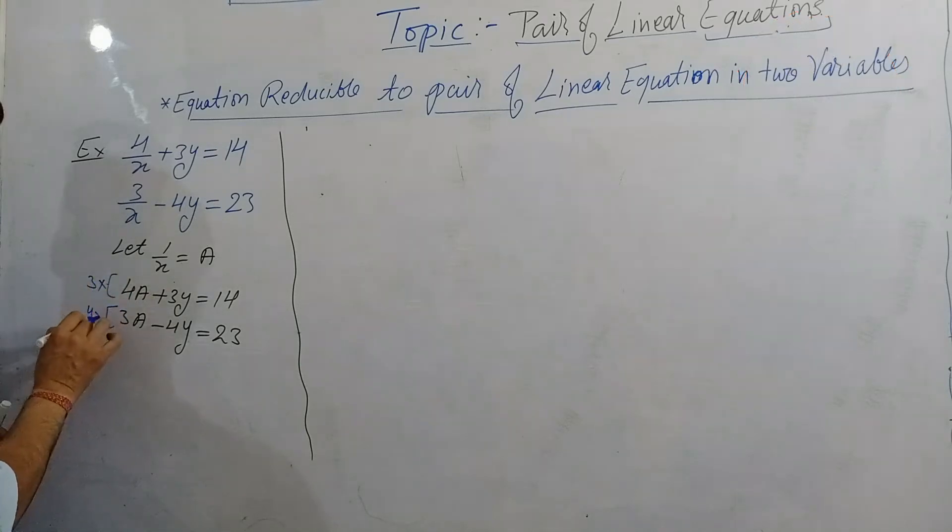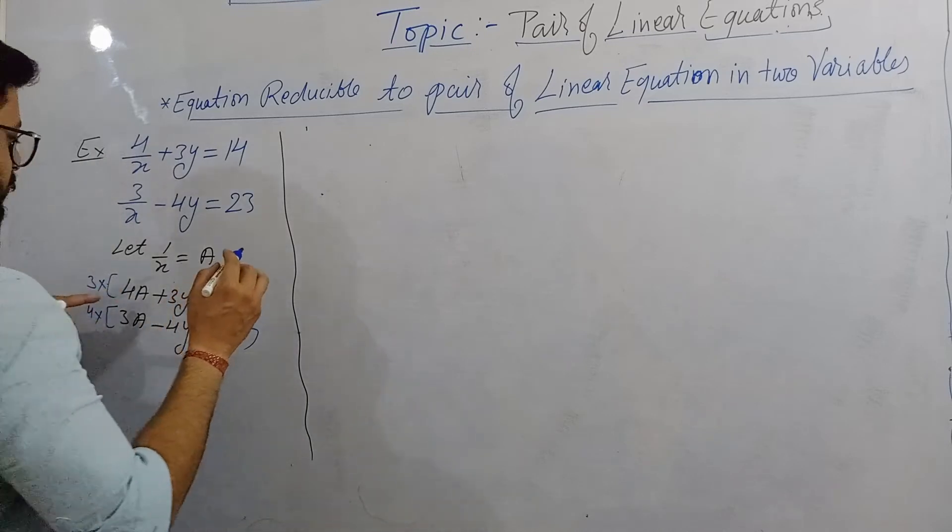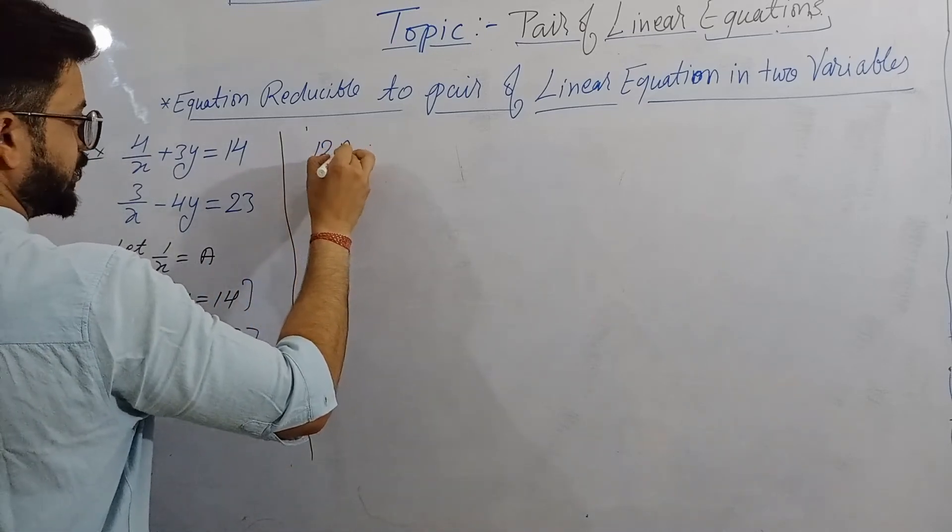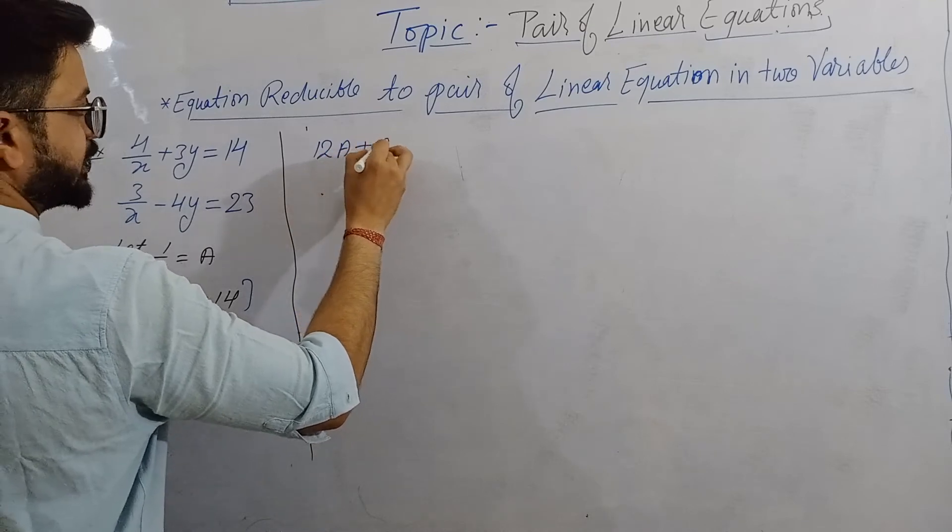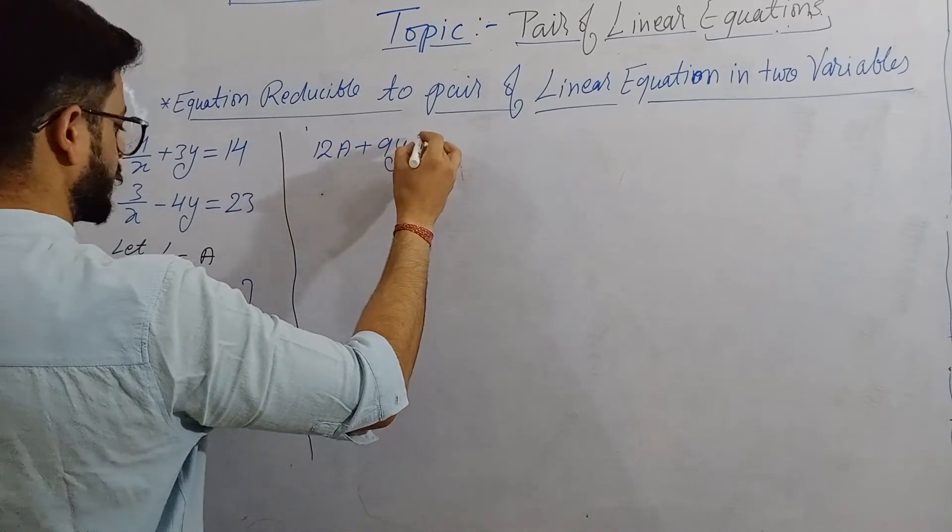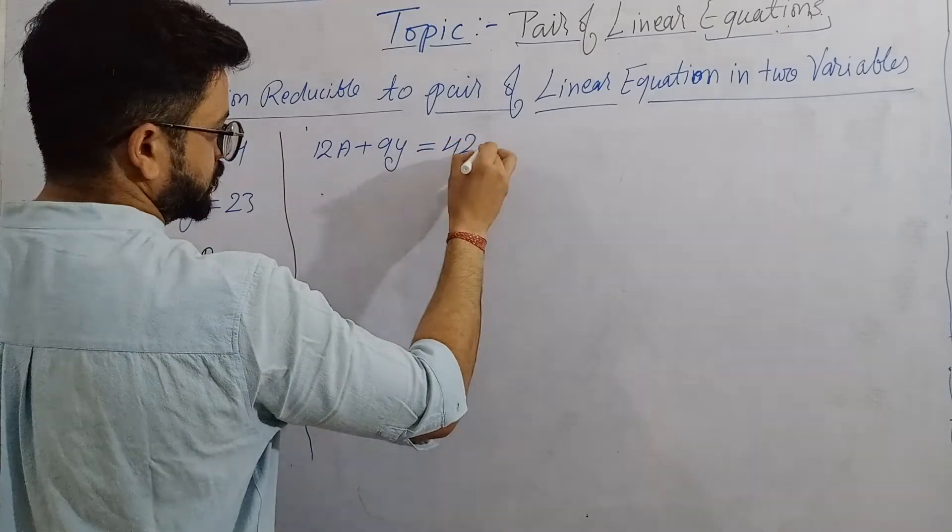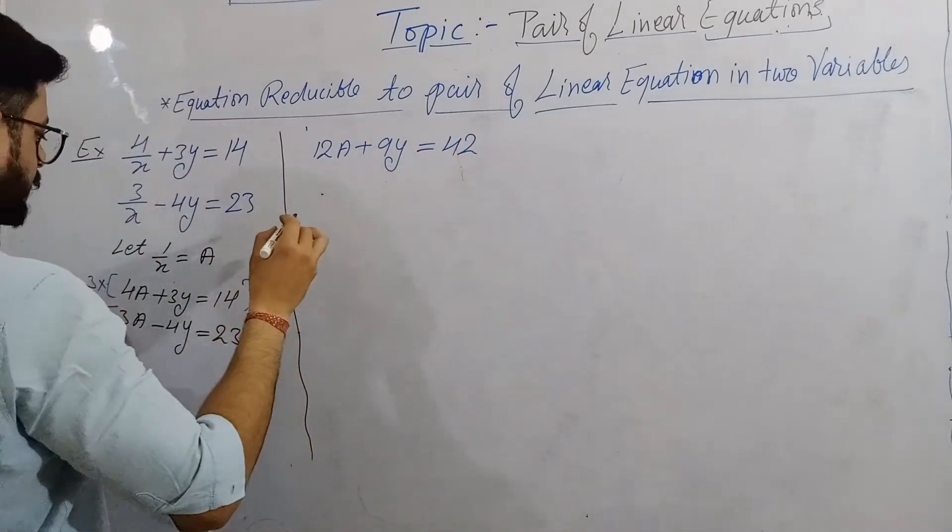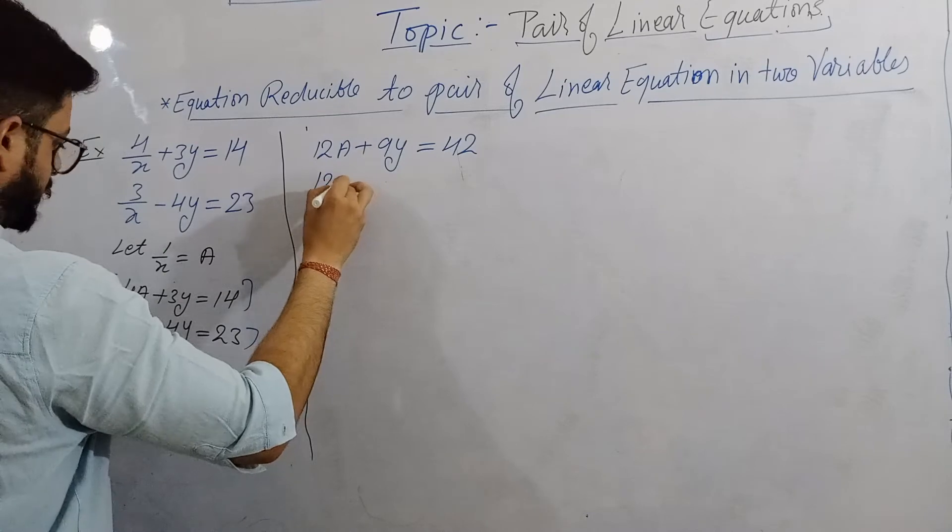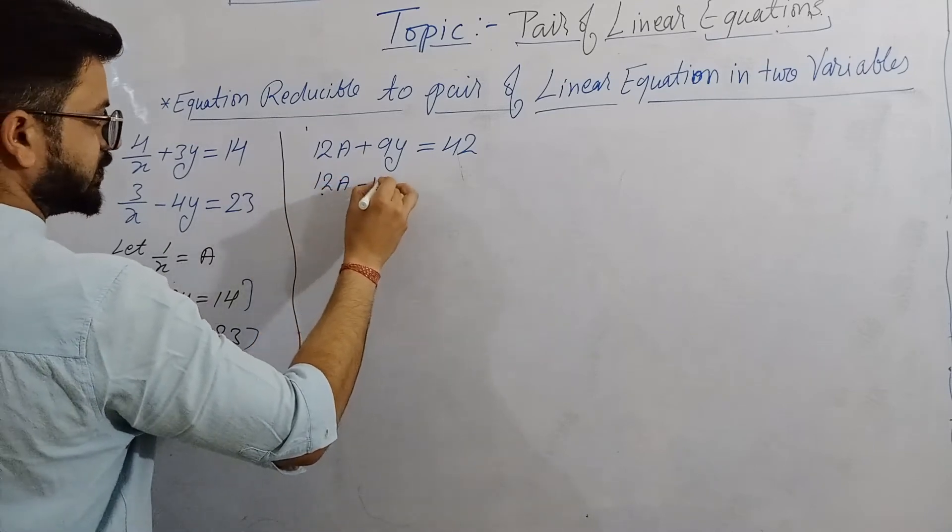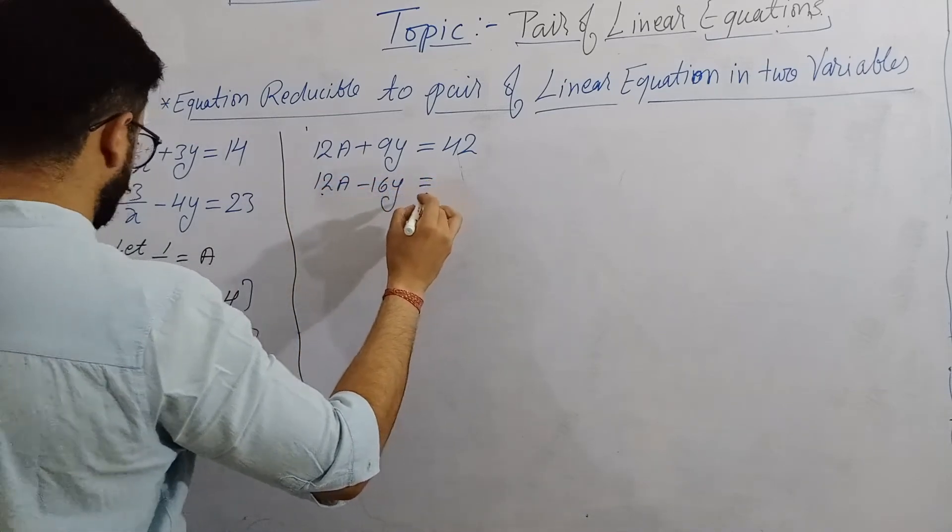Now what will be there? 12A plus 9Y is equal to 42. Now 12A minus 16Y is equal to 92.